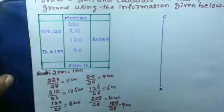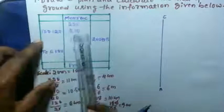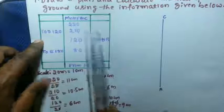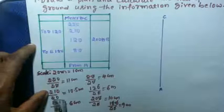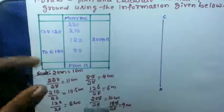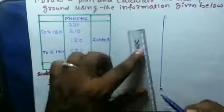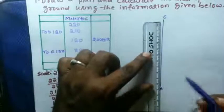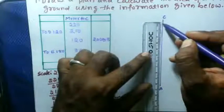Then see next one 210, its measurement in centimeter is 10.5. You start from here to measure 10.5. This is 10 and this is 0.5, 10.5, mark here.